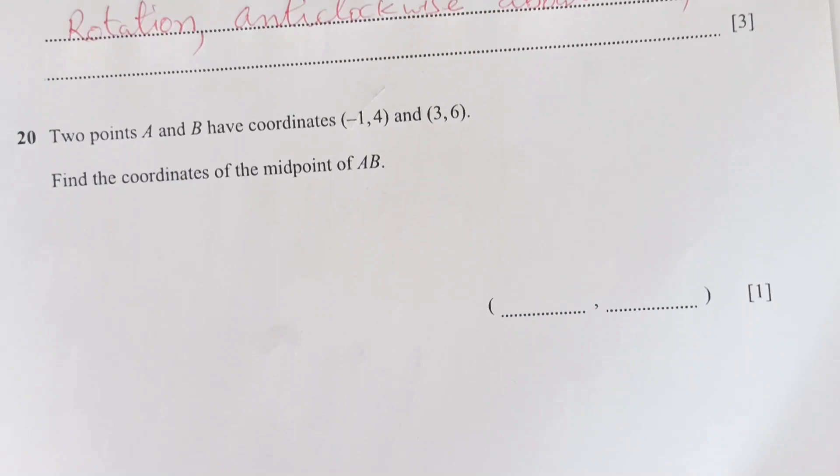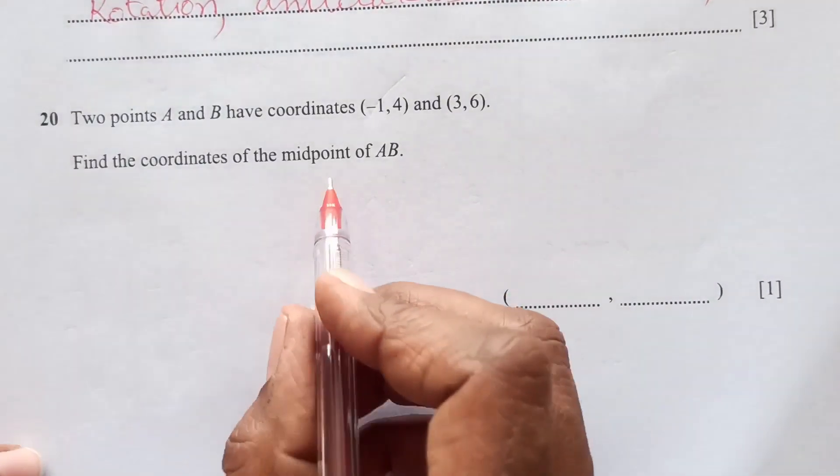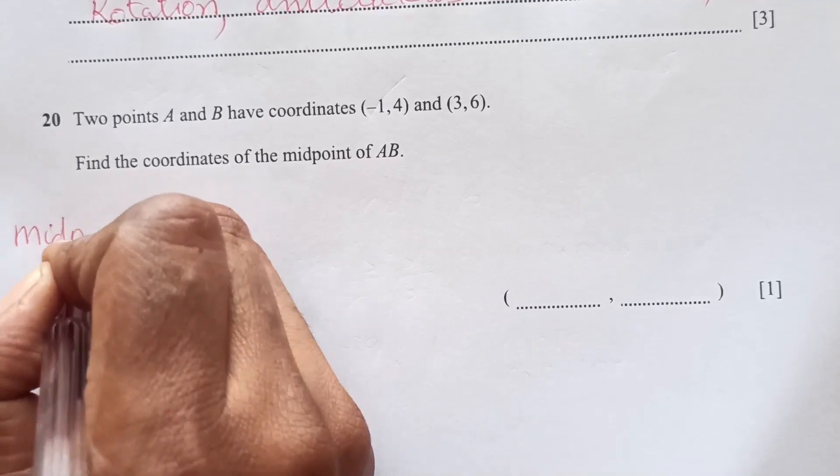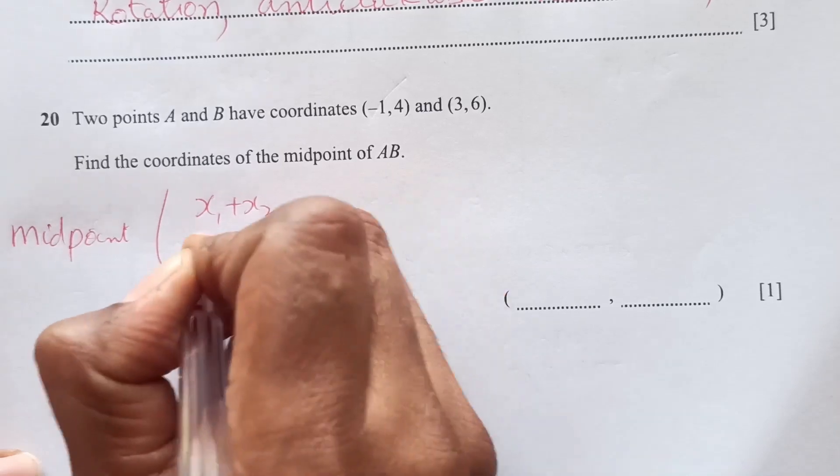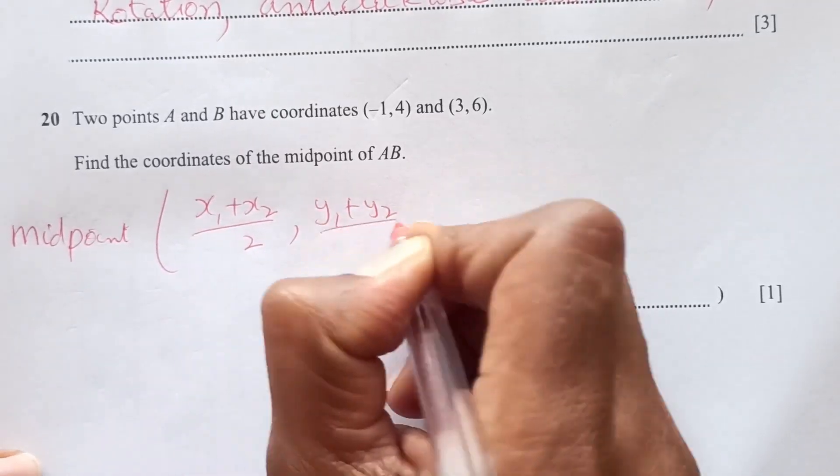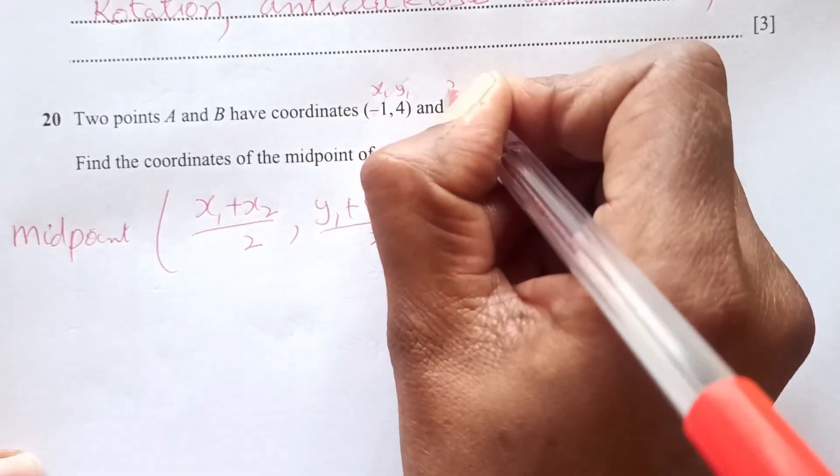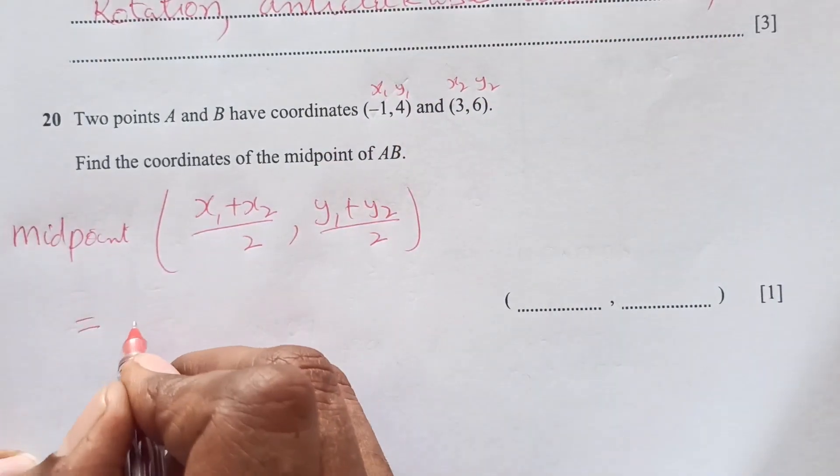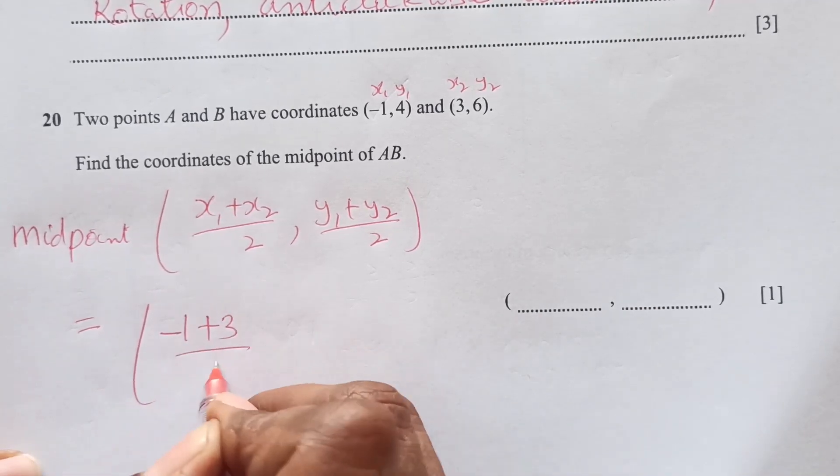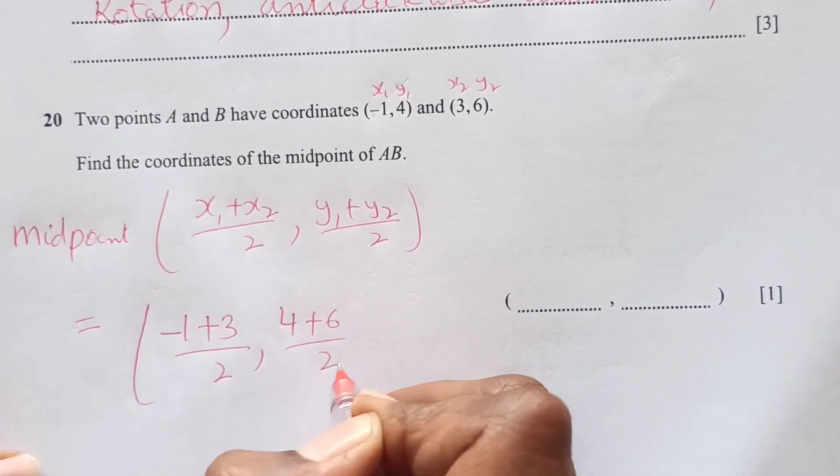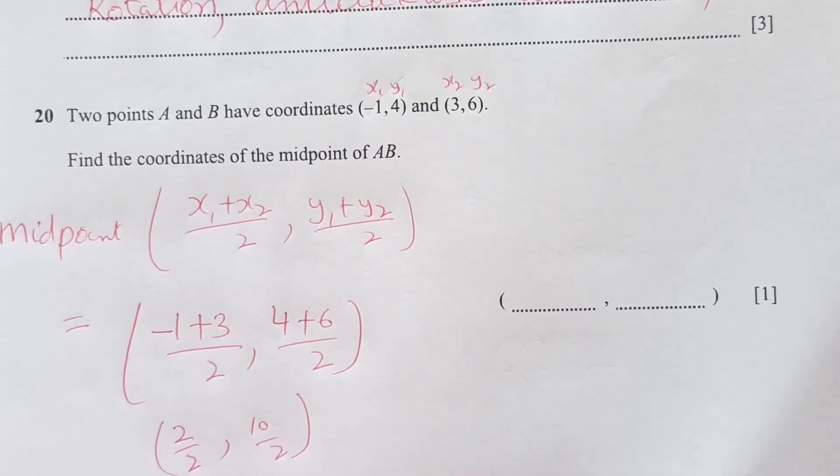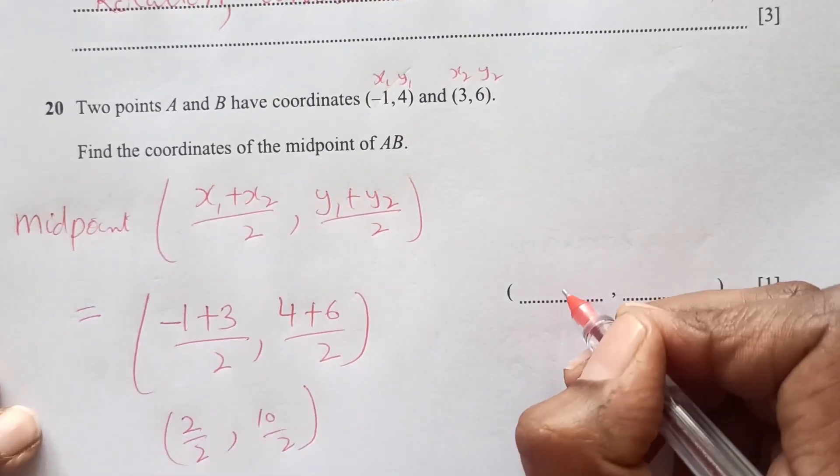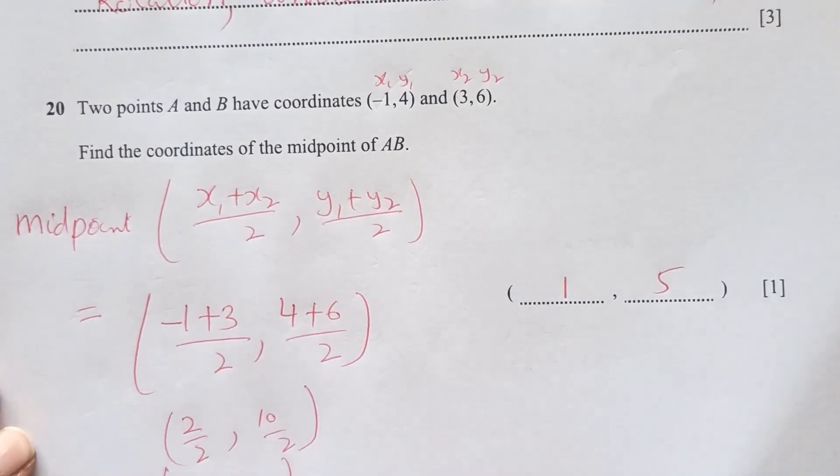Number 20. Two points A and B have coordinates. Find the coordinates of midpoint. Midpoint is always equal to (x1 + x2)/2, (y1 + y2)/2. This is x1, y1; this is x2, y2. So x1: minus 1 plus 3 over 2, 4 plus 6 over 2. This is 2 over 2, 10 over 2. So we have here 1 and 5.